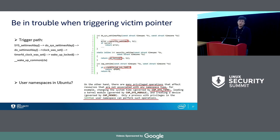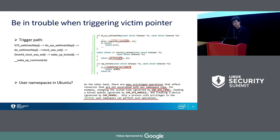We are in trouble triggering the victim pointer. There is a capability check in our trigger path — the ordinary process doesn't have the CAP_SYS_ADMIN capability, so we can't access the victim pointer. For Ubuntu, no privilege is required to create a user namespace. So can we use this to bypass the permission check? The answer is also no. The man page for user namespaces clearly describes that some privileged operations like CAP_SYS_ADMIN, CAP_SYS_MODULE, and CAP_MKNOD are not associated with any namespace tags — only the initial user namespace can perform such operations.